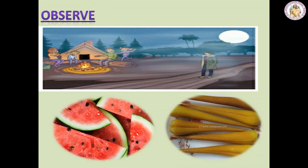Children, look at the picture. What season is it? It is the winter season. How will the winter season be? It will be very cold. What type of food do you prefer to eat — watermelon or palmyra sprout? Yes, we eat the palmyra sprout.